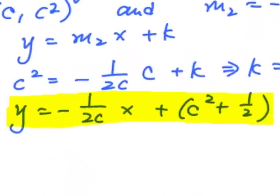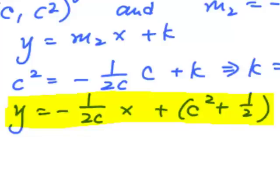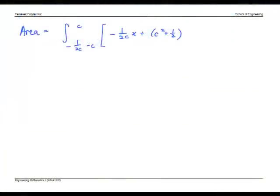From here, the top curve is minus 1 over 2c x plus c squared plus half minus x squared. Notice that these are the x variables. So integrating, we have...